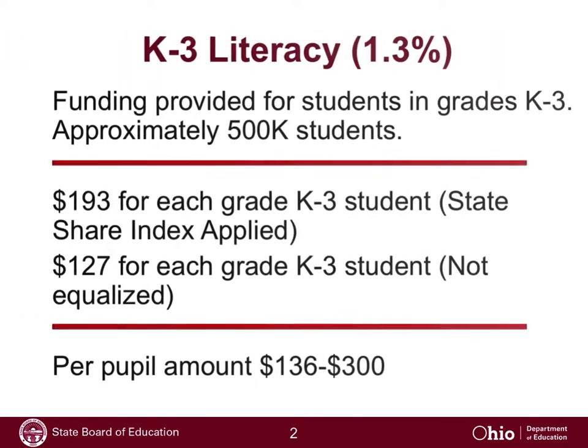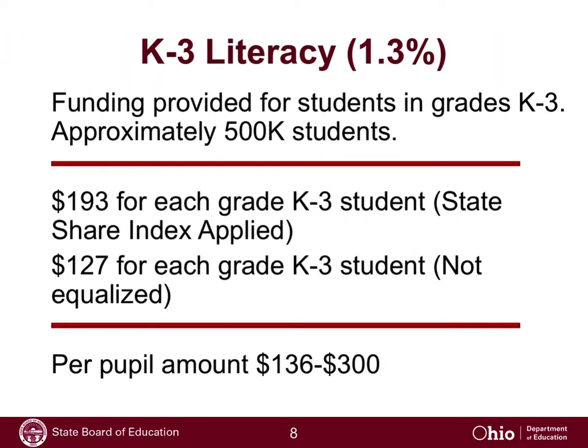The next component is the K-3 literacy component — a very small percentage, only about one and a half percent. It's funding provided for students in grades K through 3, about 500,000 students. There are two approaches: one piece is equalized, so the state share index is applied, computed at $193 for each student in the K-3 grade band. Then an additional $127 per student is not equalized — every district is assured that $127. The result is a range of between $136 and $300 per student in K-3 for the literacy component.